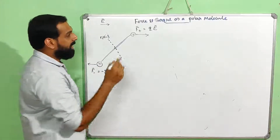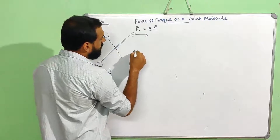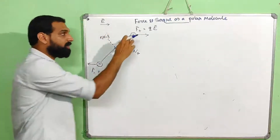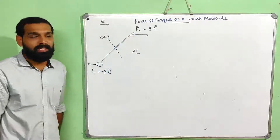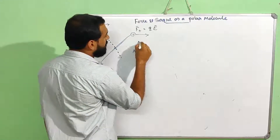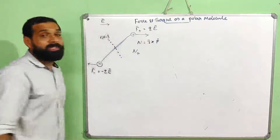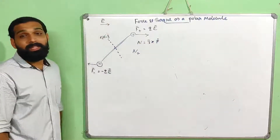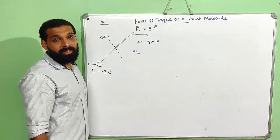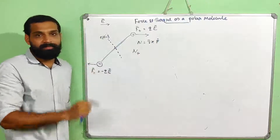This torque is denoted N. Let N plus be the torque experienced by the positive charge. The general formula for torque is R cross F — force into perpendicular distance — mathematically R cross F.